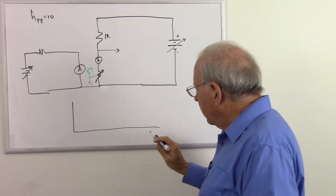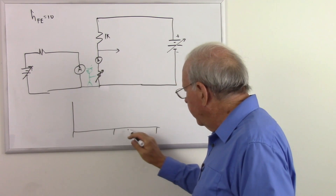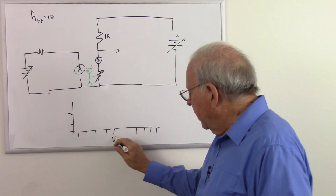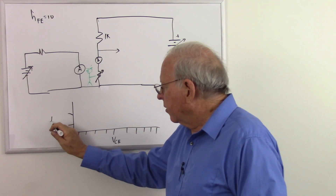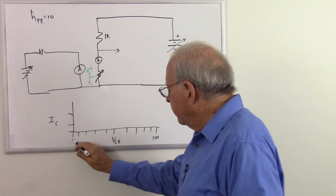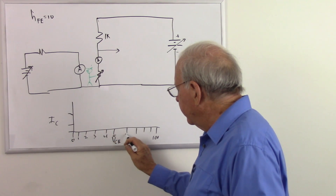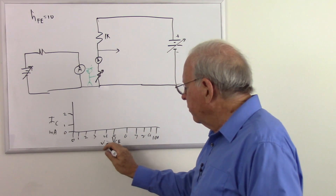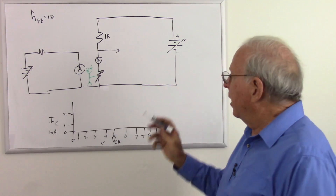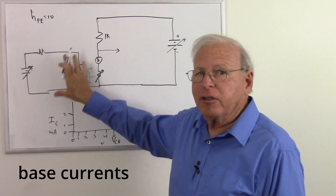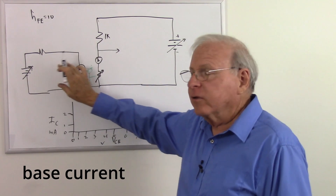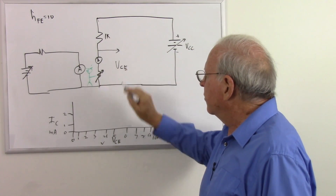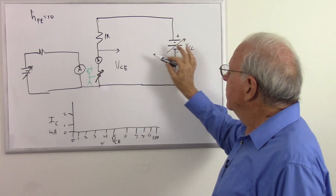Down here I'm going to start drawing a graph, but I'll complete it later. Here is our VCE — voltage from the collector to the emitter — and here is our collector current. We'll make this up to 10 volts: 0 through 10. We'll make this 0, 1, and 2 milliamps. So this will be volts. This time, I'm going to have a steady base voltage and change our VCC to see what happens. As I change that, I'm going to change my VCE.